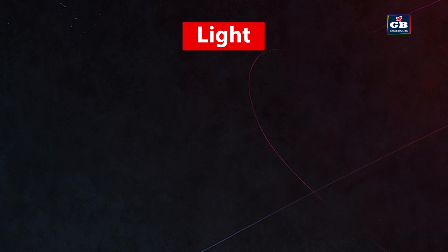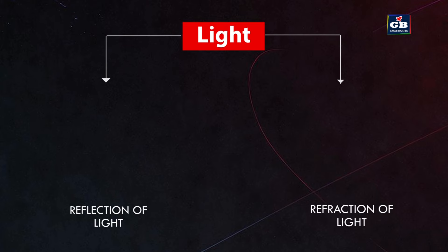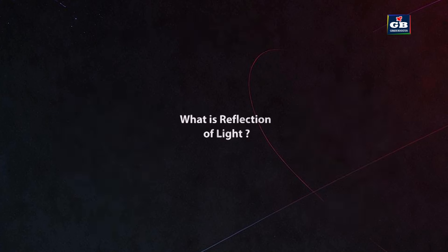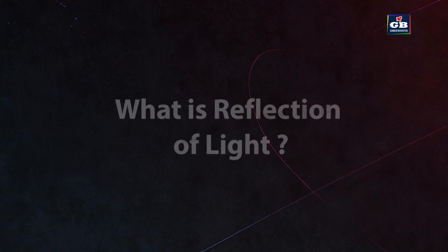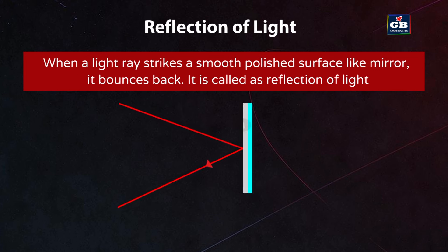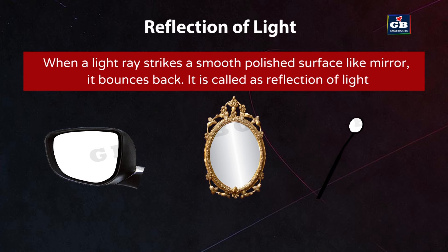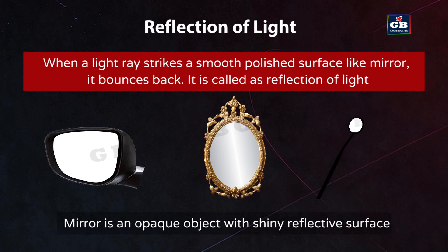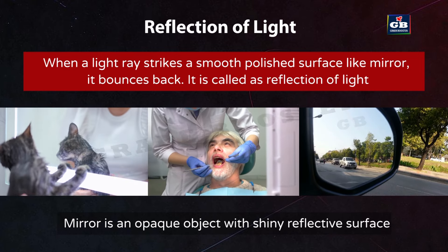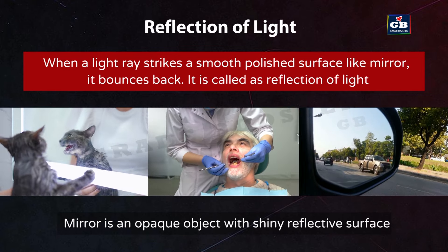In this lesson, we study the reflection and refraction of light, considering that light rays travel in straight lines. Reflection of light: when a light ray strikes a smooth polished surface like a mirror, it bounces back — this is called reflection of light. We can study reflection using mirrors, which are opaque objects with shiny reflective surfaces. It is because of the reflection of light that we see our images in mirrors.